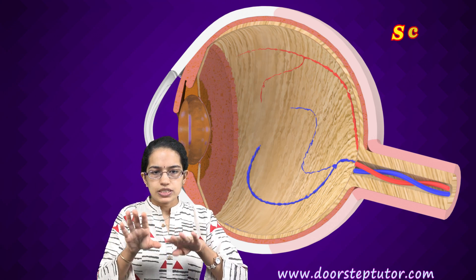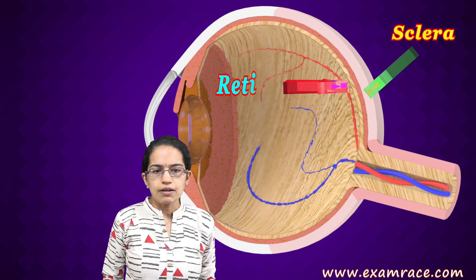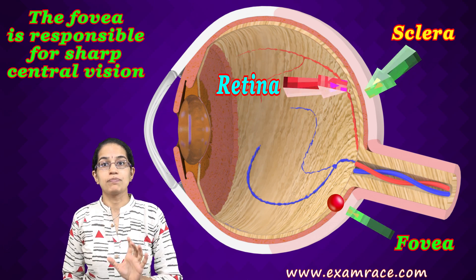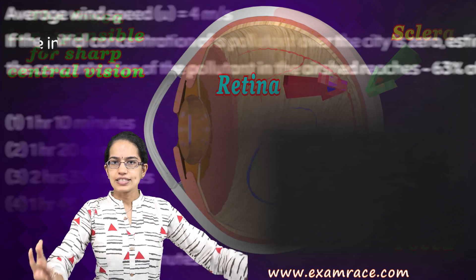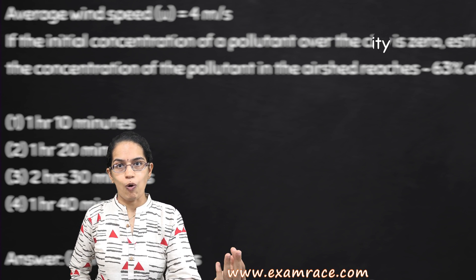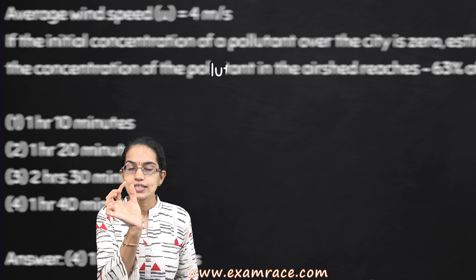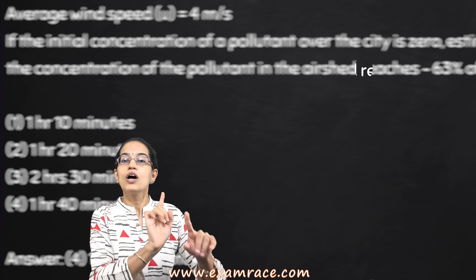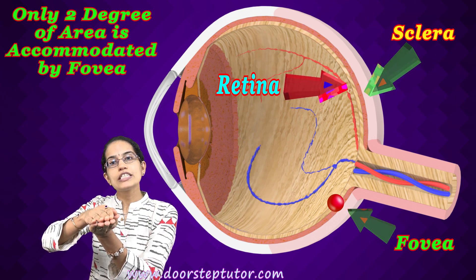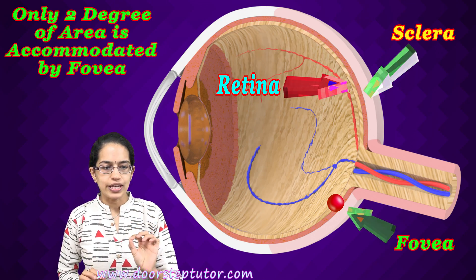As we have already talked about, the sclera is the outermost layer, and within it we have other layers, including the retina. On the retina we have the fovea. Fovea is a point where we have the brightest and clearest vision. At one time, only about two letters of a page you are reading would be visible to you in the clearest form — we see the whole page because our eyes are scanning through it. The most precise and clear vision is on just two letters at a time, and that is where image formation occurs on the fovea. Fovea is able to accommodate only two degrees of the visual area.